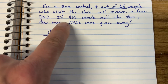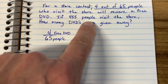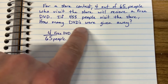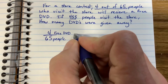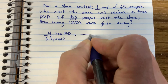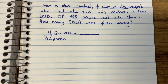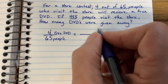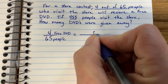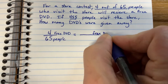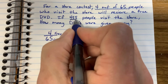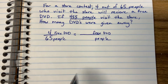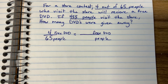And then it says: If 450 people visit the store, how many DVDs were given away? So I see a third number here, which means we can use a proportion to solve this, just like we can use a proportion for most word problems in sixth grade. So on the top here, we have 'free DVD' as the label and 'people' on the bottom. You have to decide where 450 people go in our proportion, cross multiply and divide, and you will have the answer.